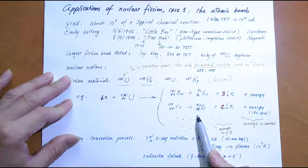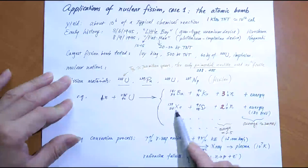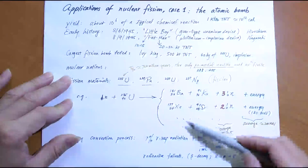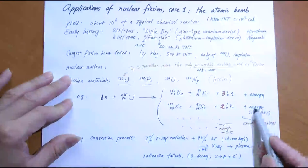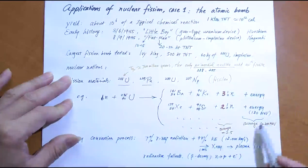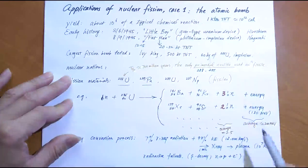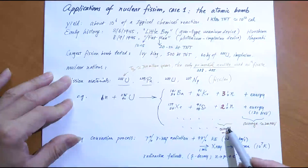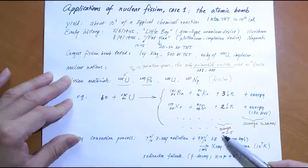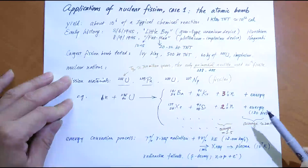Different fission products emit different amounts of energy — for example, 180 MeV in one reaction, slightly more in another. On average, about 200 MeV of energy is released per fission event. The number of neutrons emitted also varies from reaction to reaction, but on average it's about 2.5 neutrons emitted per event. That's the nu (ν) value.